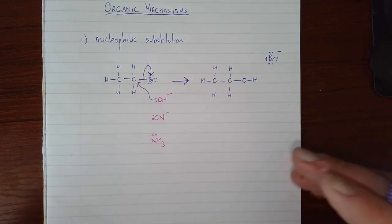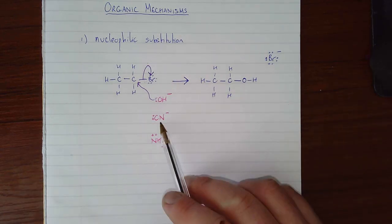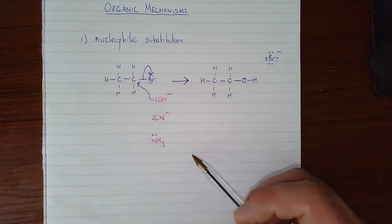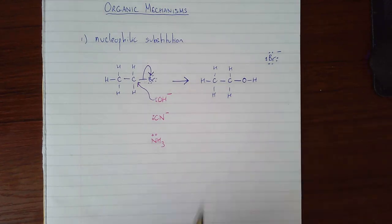Strictly speaking that Br already had three lone pairs on it and now it's up to four. We don't normally draw those lone pairs. It's bromide now because it's got eight electrons in its outer shell. It's a group 7 atom that's been given an extra one.